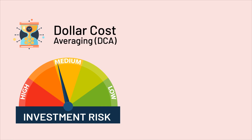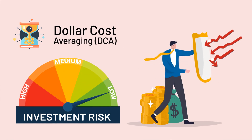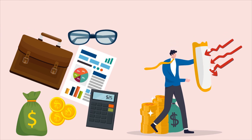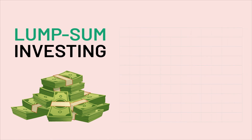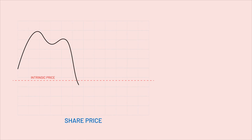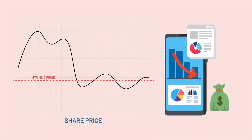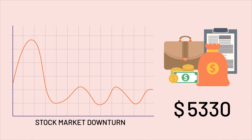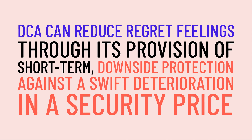The logic behind dollar cost averaging. First: risk reduction. DCA reduces investment risk and preserves capital to avoid a market crash, providing liquidity and flexibility in managing an investment portfolio. DCA avoids the disadvantage of lump sum investing — specifically, purchasing a security when its price is artificially inflated due to market sentiment — which results in buying a lower-than-required quantity when the security's price corrects to its intrinsic value through a market correction or bubble burst.